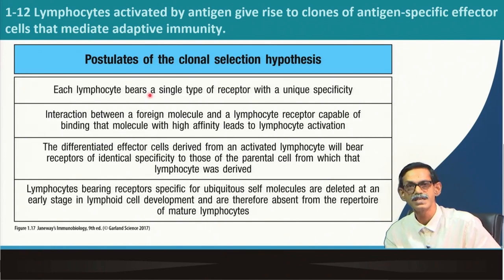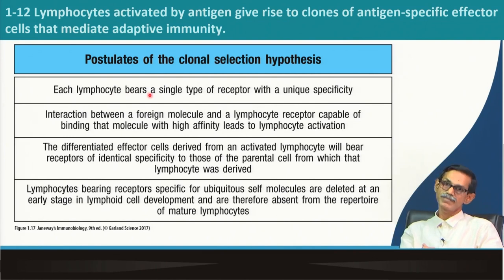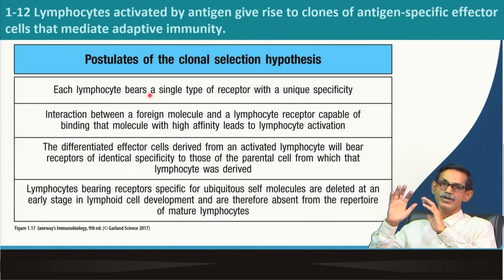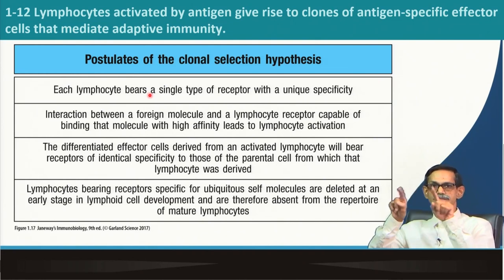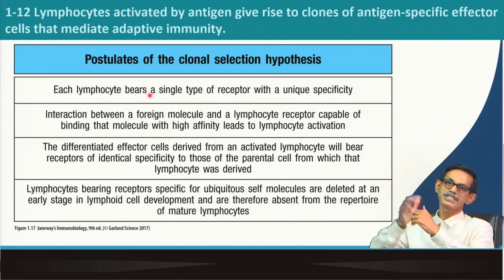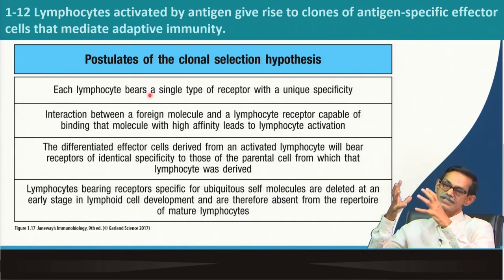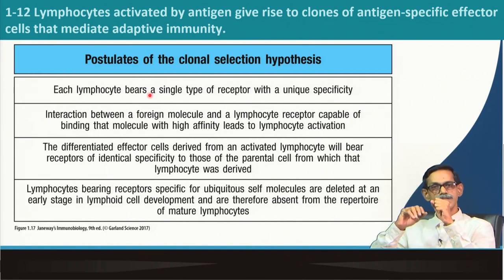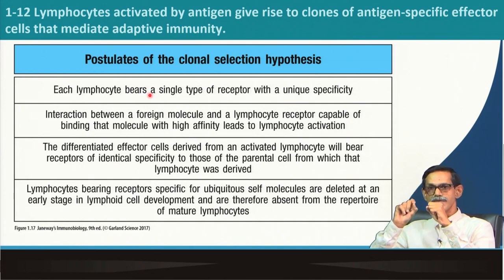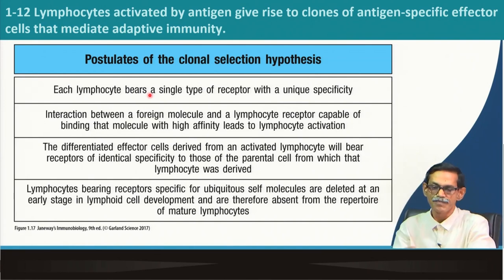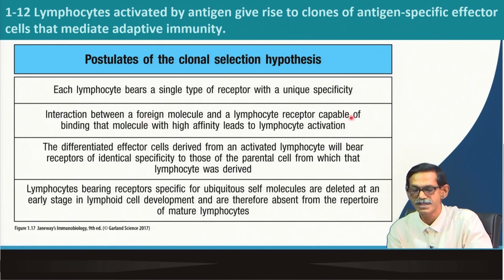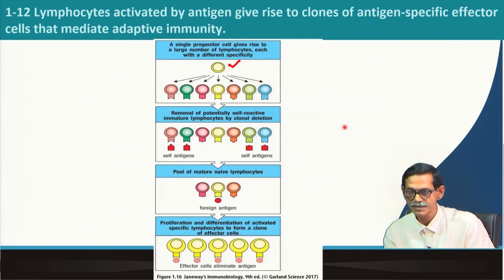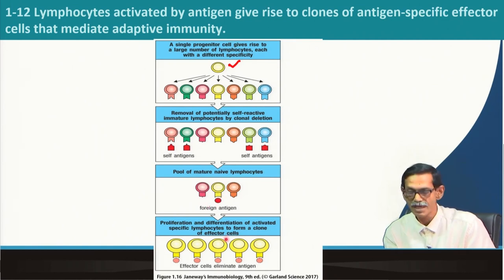What are the postulates of the clonal selection hypothesis? First: each lymphocyte bears a single type of receptor with a unique specificity. That means one lymphocyte — whether B or T — will produce only one kind of receptor. If it interacts with a triangular antigen, all its receptors will always interact with that triangular antigen. Their antigen specificity is unique; they will not cross-react with others. Second: interaction between a foreign molecule and a lymphocyte receptor capable of binding it with high affinity leads to lymphocyte activation.